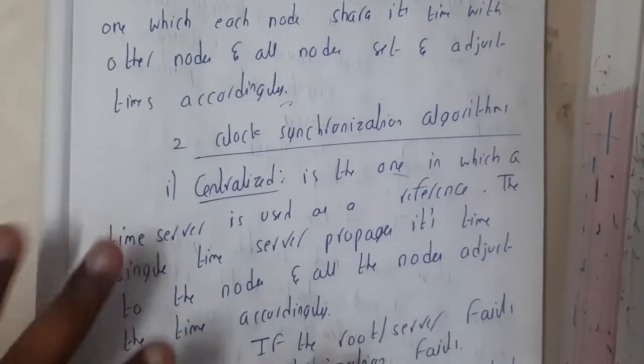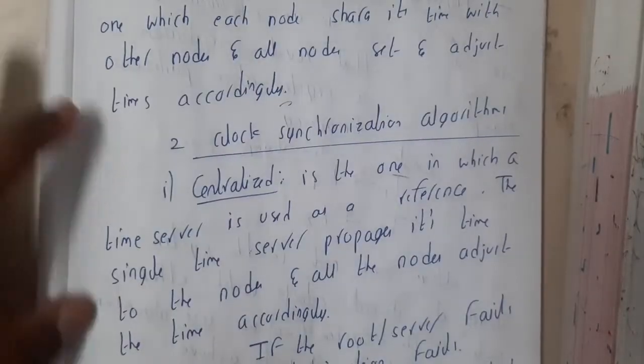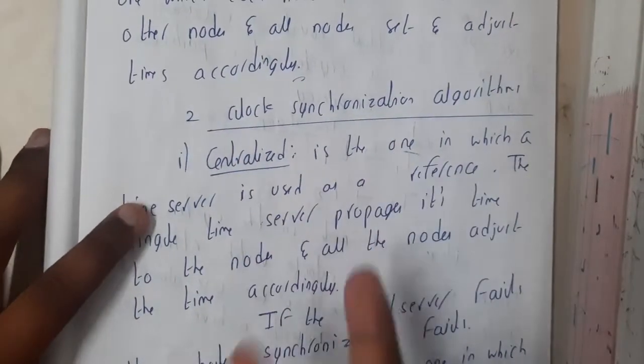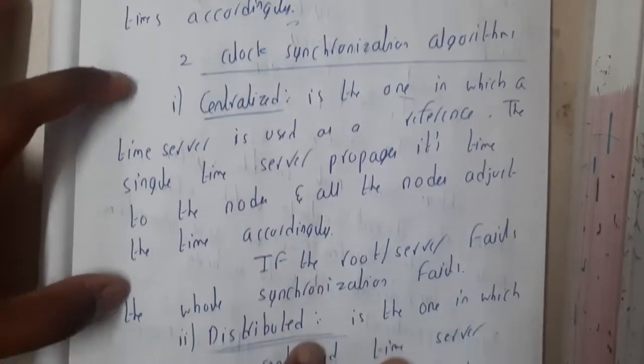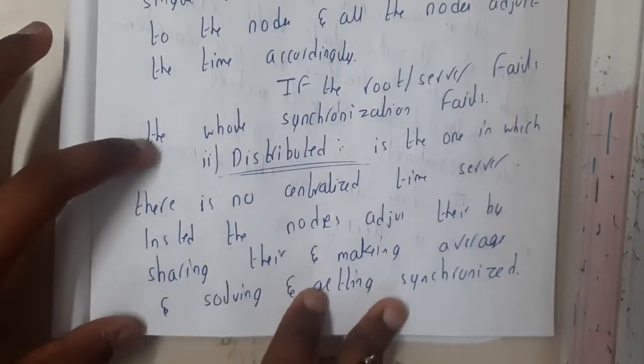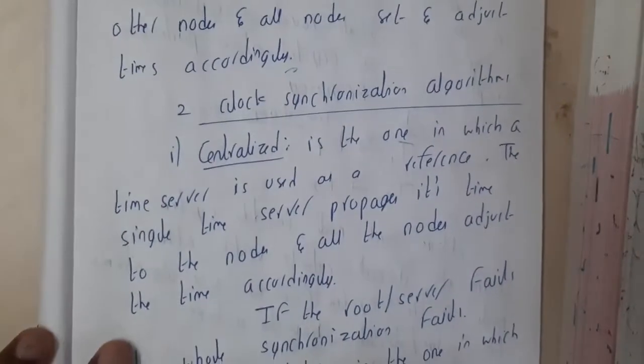Two clock synchronization algorithms are there. The first one is centralized and the second is decentralized or distributed. Centralized, from the name itself, there is a system in the center that will be controlling everyone.